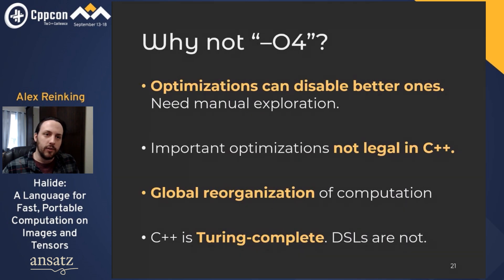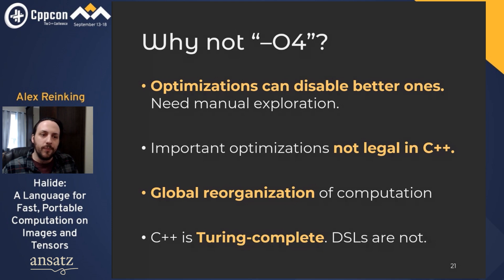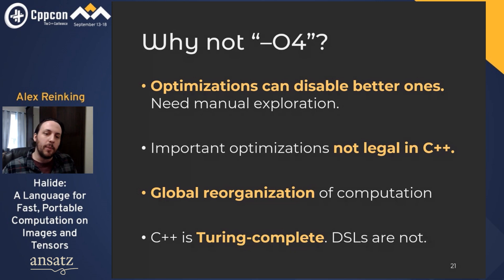So why not make C++ compilers do this work for us? There are a few good reasons. First, the space of possible optimizations is extraordinarily large and complicated — making one locally good decision might cause the optimizer to miss a much better opportunity down the line. Second, some important optimizations are not legal in C++; compilers aren't allowed to change malloc sizes or reorder external function calls. Third, from a theoretical standpoint, C++ is Turing complete and could do absolutely anything, whereas Halide can only express feed-forward array programs — making it much easier to analyze.